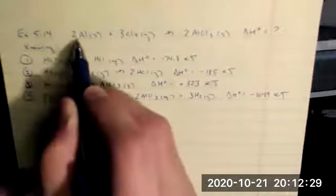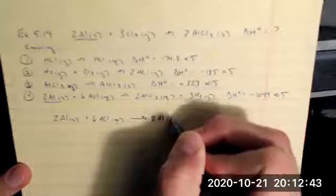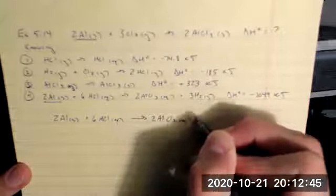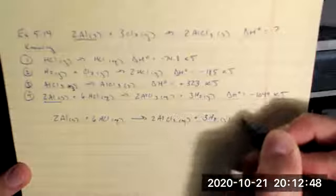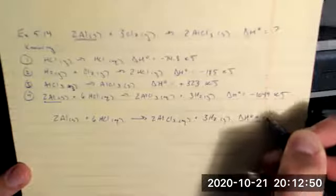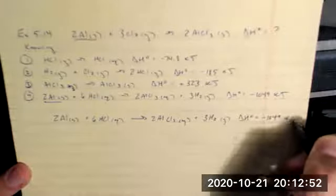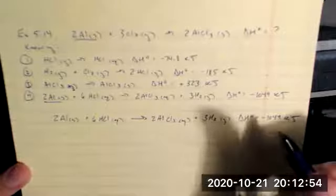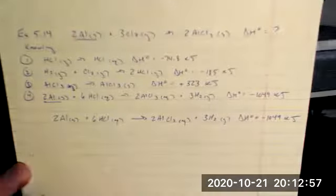So I'm going to start just by rewriting equation four because it matches up that two aluminum solid right where I want it to be as a reactant. I'm going to rewrite that as a thermochemical equation, making sure I include my physical states and my enthalpy values. This reaction was unchanged, so the enthalpy value stays the same negative 1049 kilojoules. So that took care of my aluminum.